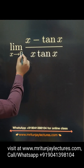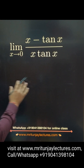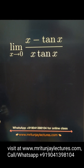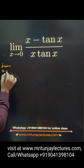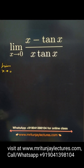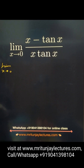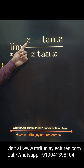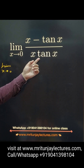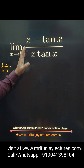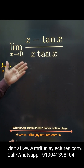Question of the day: limit x tends to 0, x minus tan(x) upon x·tan(x). First, if you put x = 0, then we get 0 minus tan(0) = 0 in the numerator, and 0 into tan(0) = 0 in the denominator. So we get 0 by 0 form, okay, so we can apply L'Hôpital's rule here.